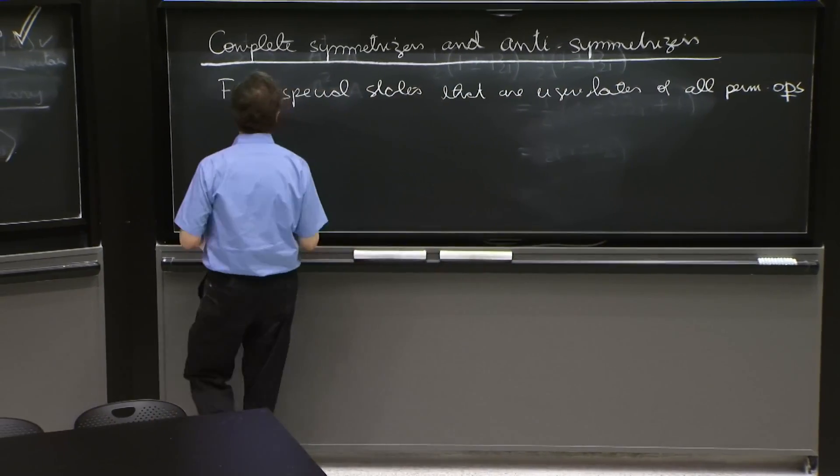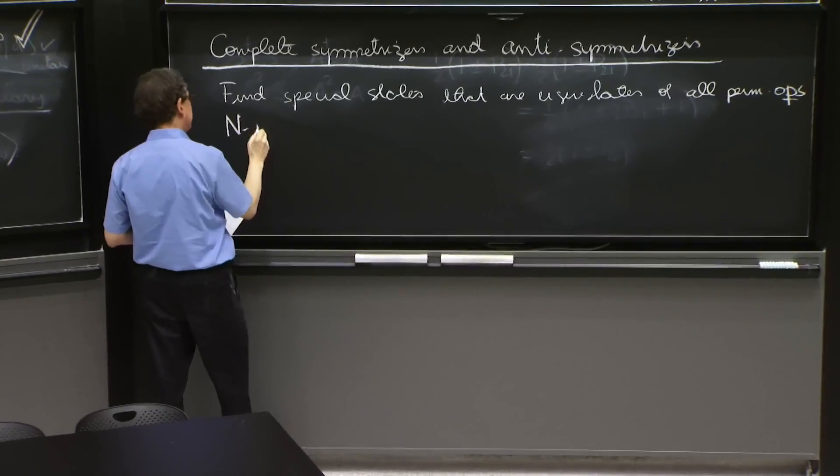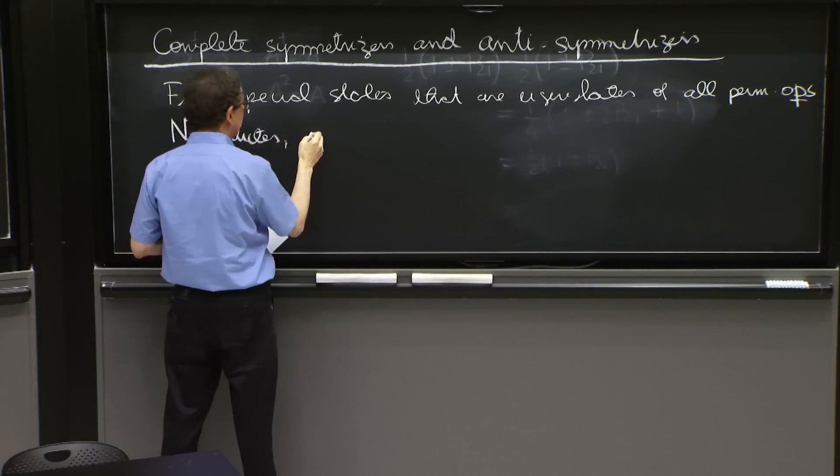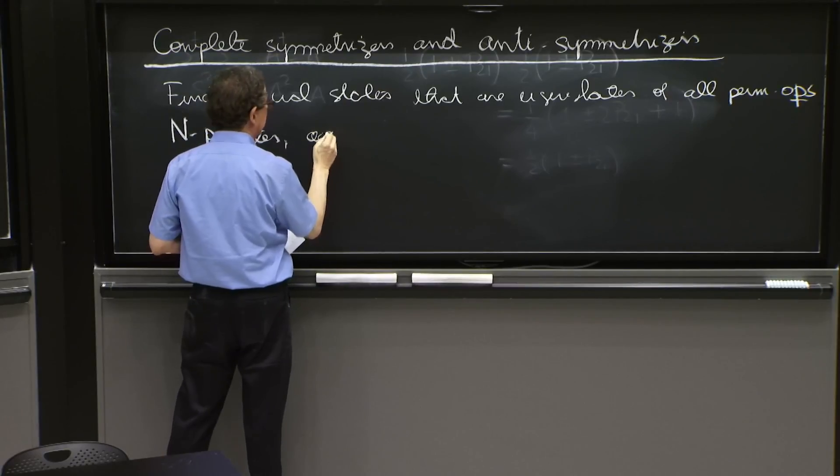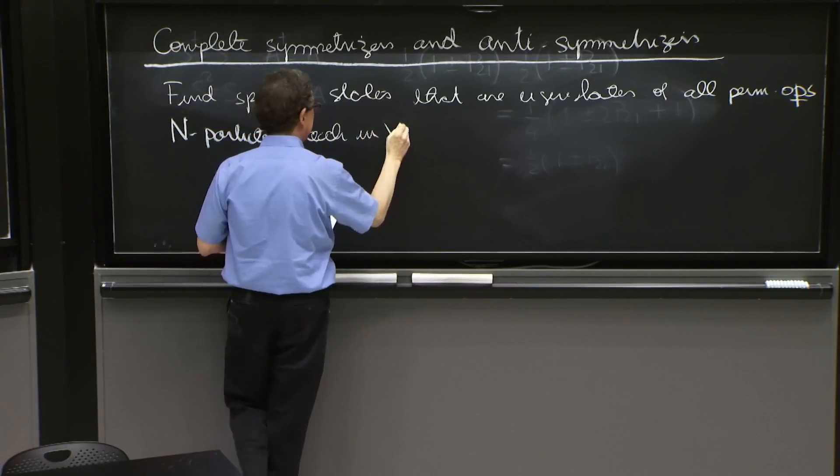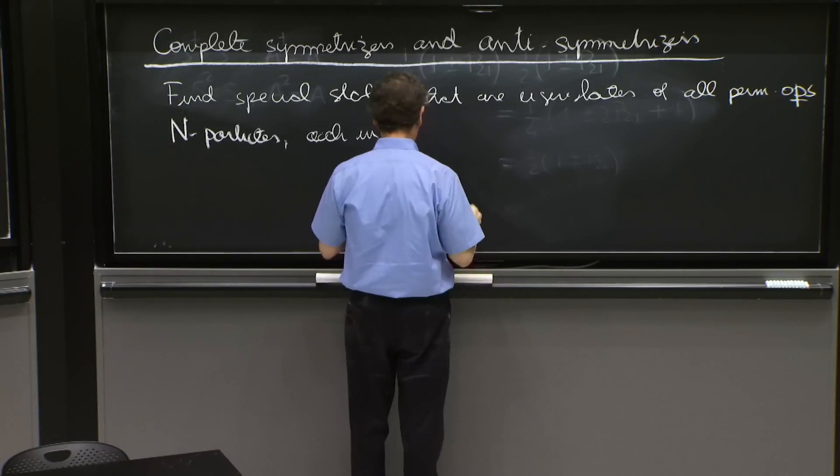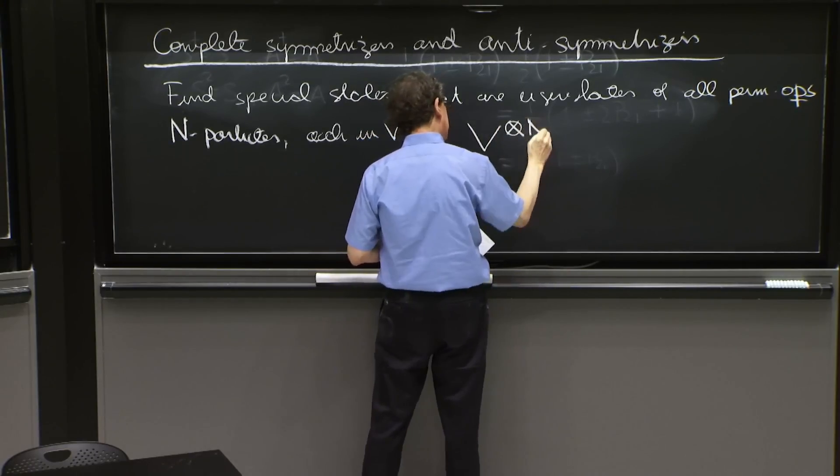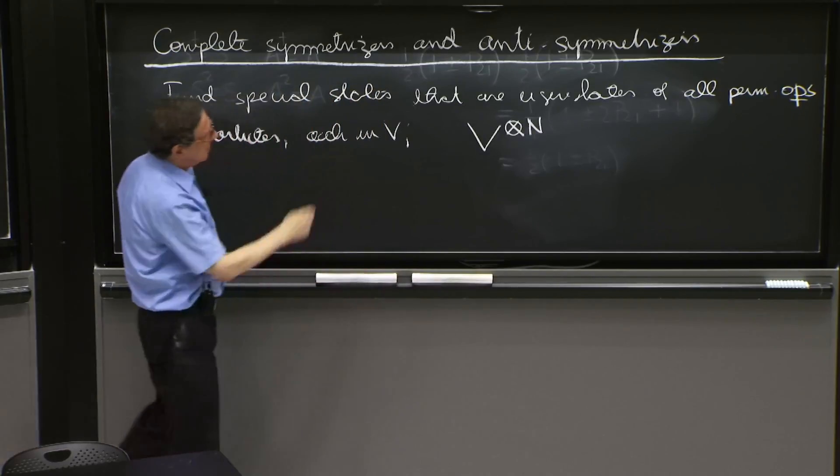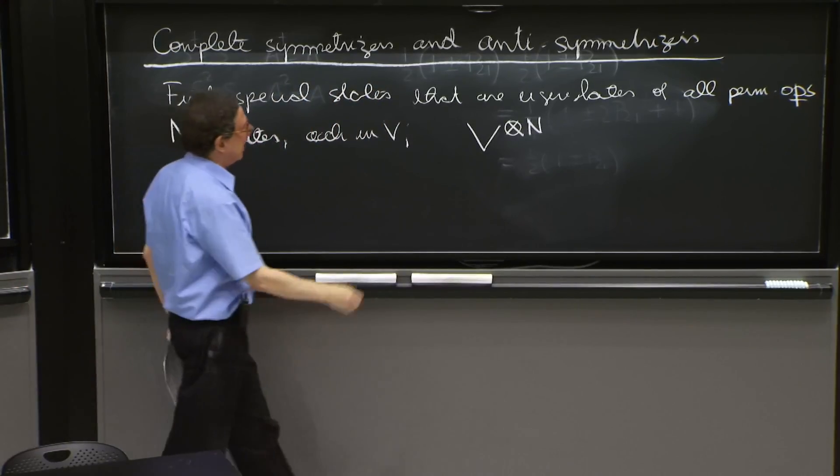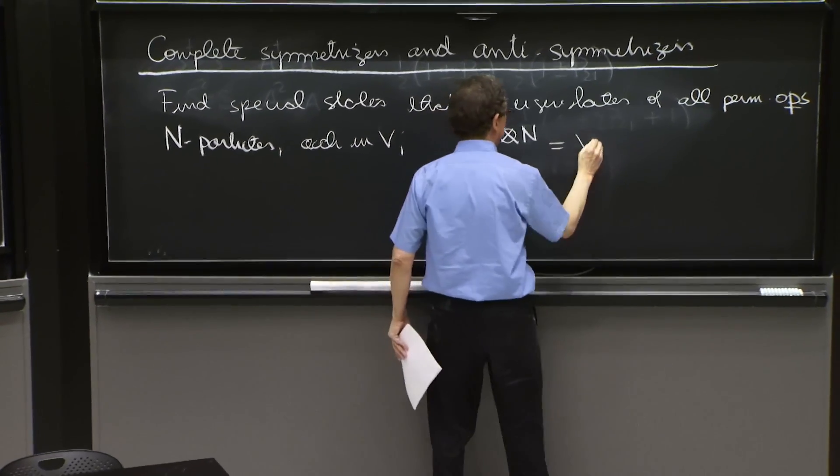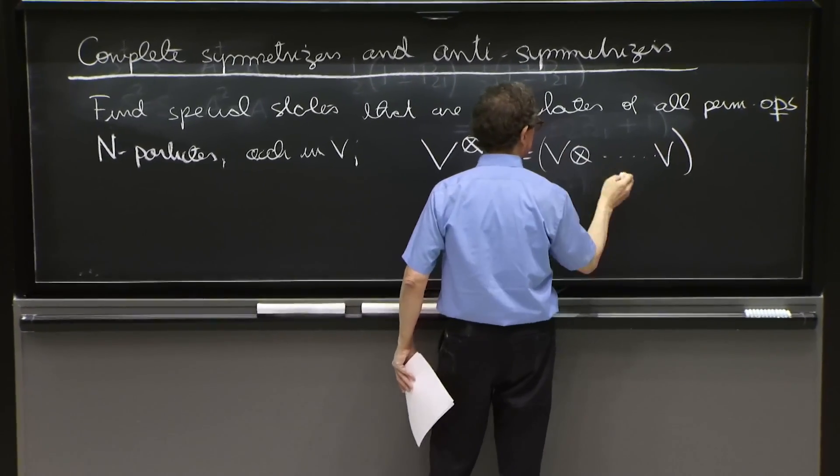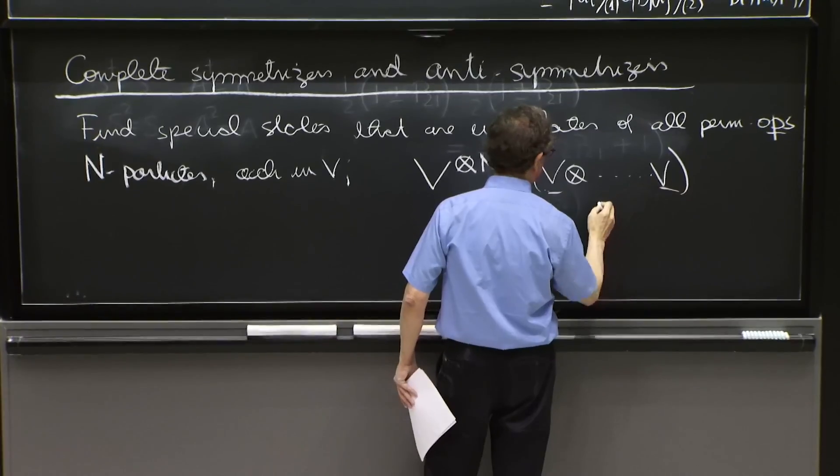So let's assume we have n particles, each living in V, so that the n particles live on V tensor n. People write it like that, V tensor n, which is supposed to mean V tensor V with V appearing n times.